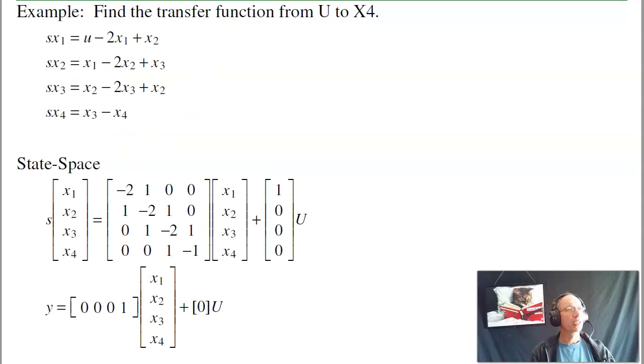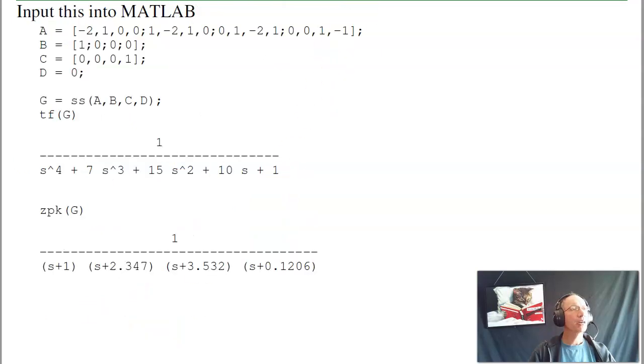Second example. Here's a fourth order system, one that I really do not want to do by hand. In MATLAB, it's not a problem. If I have four coupled differential equations, I can put that in matrix form. The first equation says the derivative of X1 is equal to u minus 2X1 plus X2. The second equation, derivative of X2 is X1 minus 2X2 plus X3. Likewise for equation three, equation four.